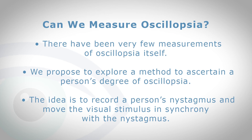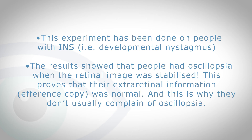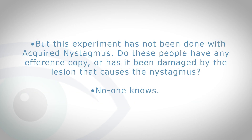So can we measure oscillopsia? There have been very few measurements of it. We propose to explore a method to ascertain a person's degree of oscillopsia — the idea is to record a person's nystagmus and move the visual stimulus in synchrony with the nystagmus. This experiment has been done in the past, but only on people with infantile nystagmus syndrome. The results were quite surprising: when the image was stabilized on the retina, people with INS actually saw the world as moving, even though the image was completely steady on their retina. This proves that their extra-retinal information is intact, and that's why they don't complain of oscillopsia. But this has not been done on people with acquired nystagmus.